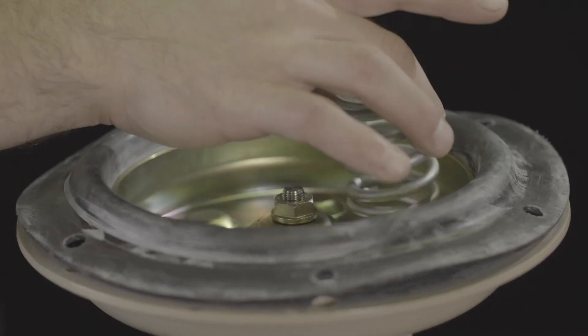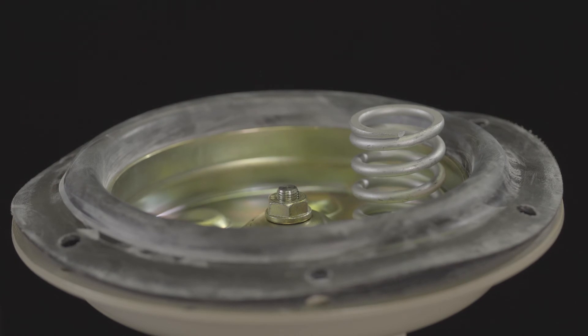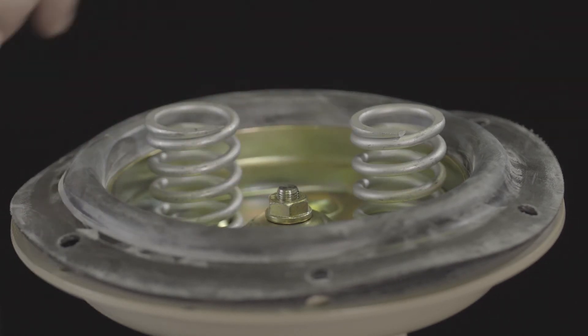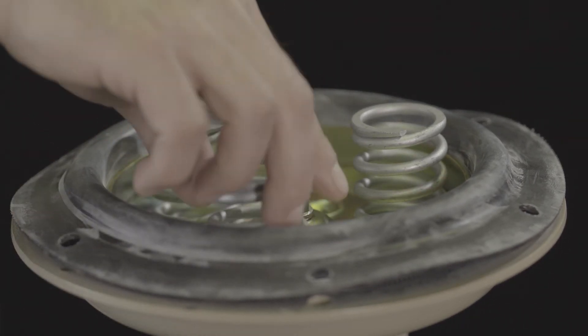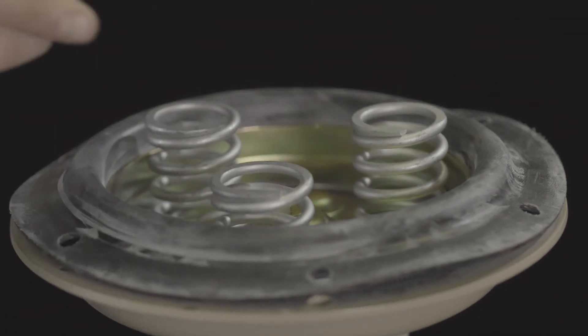Place the springs onto the diaphragm plate, centering them in the intended recesses. The final actuator spring range will determine the appropriate springs to be installed.